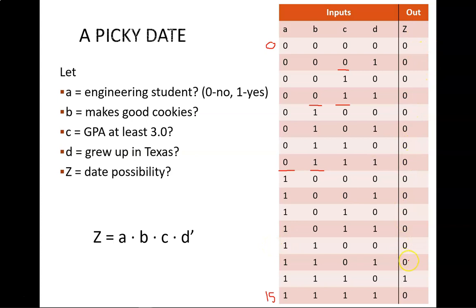Now for the output column. Steve required that all of the conditions were met. This means there is only one true value in the output, occurring down here, where A is 1, B is 1, C is 1, and D is 0. Why is D 0? Because we define D as the question, did the date prospect grow up in Texas? And Steve wants the answer to be no.